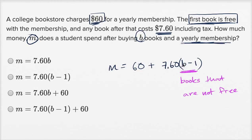And this makes sense. If you buy, if B is two, two minus one, you're gonna pay for one book. If B is 10, that means you're only gonna have to pay for nine books. Nine times 7.60 plus the membership.